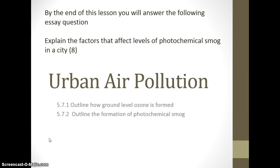Topic 5.7 is all about urban air pollution — the pollution around us in the troposphere. The aim of this PowerPoint and any other activities you do as part of this objective is to be able to explain the factors that affect levels of photochemical smog in a city.